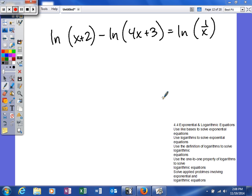Alright, our next example looks like this. The natural log of x plus 2 minus the natural log of 4x plus 3 is equal to the natural log of 1 over x.